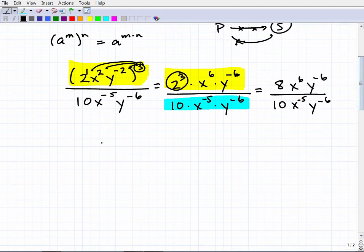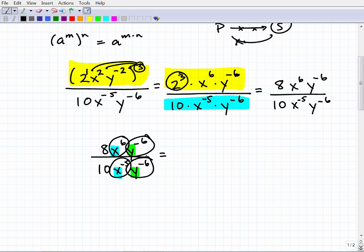So now let's continue the problem down here. I have eight x to the six, y to the negative six, all over 10 x to the negative five, y to the negative six. So now there's a couple options here. We have x's involved. So we have the base of x and we have this base of y. So these are powers. So somehow I'm going to have to get these guys here linked up and I'm going to have to simplify those and I'm also going to have to simplify the y's.